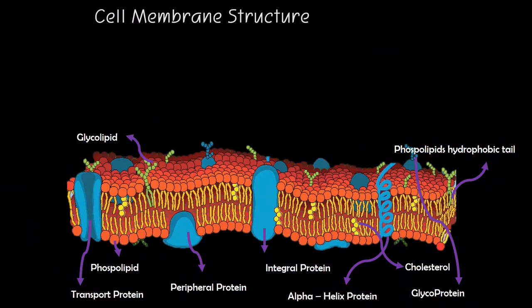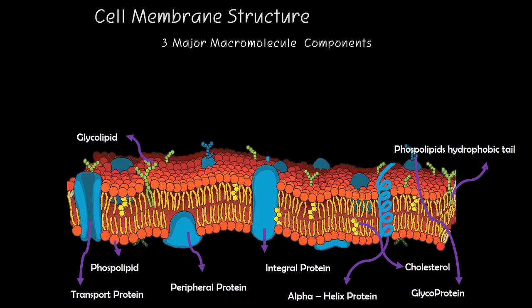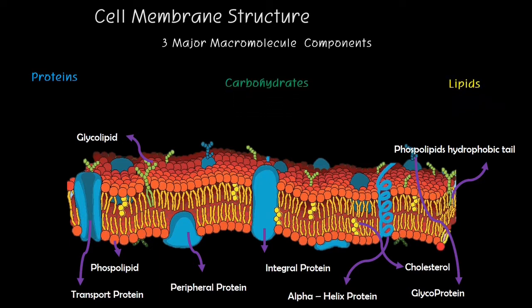The cell membrane structure consists of three major macromolecule components: namely the proteins, the lipids, and the carbohydrates. Proteins play a complex membrane function. It is the major player in a cell transport mechanism, and it includes signaling, fluid exchange, and a lot more.